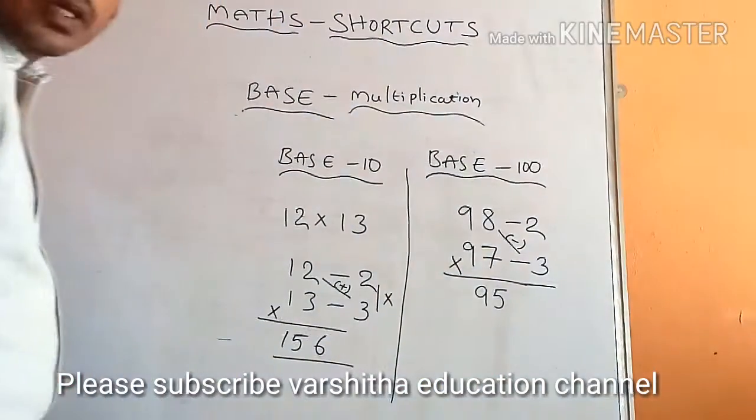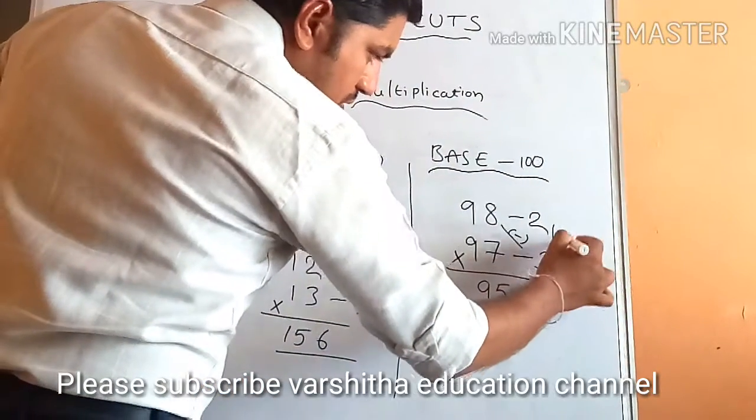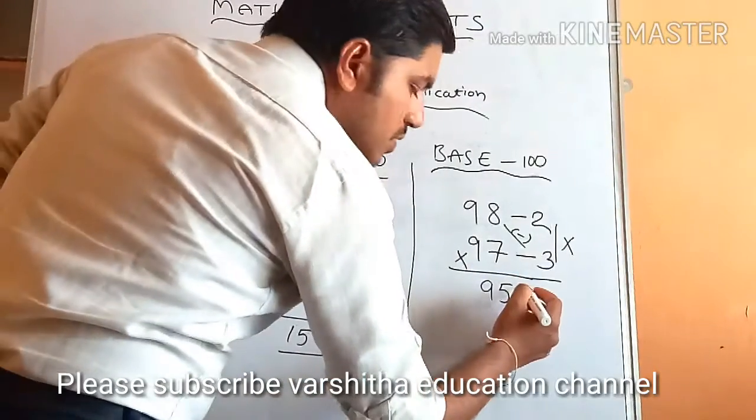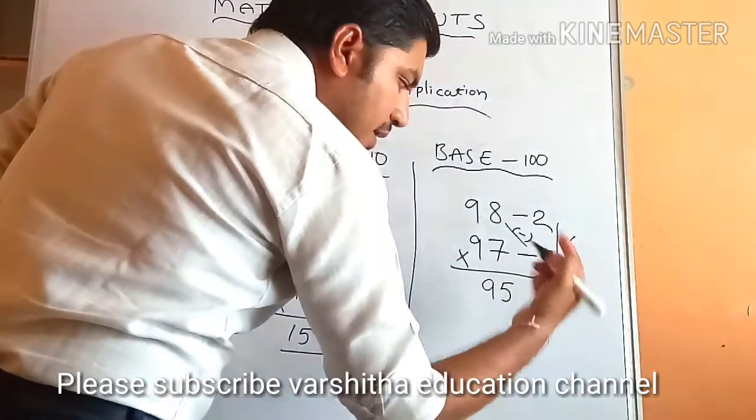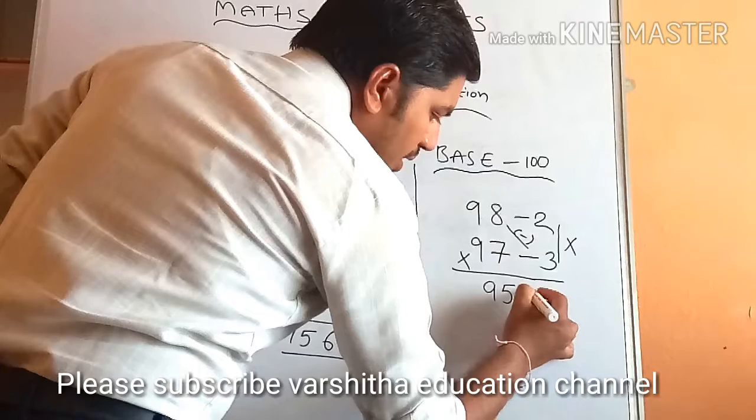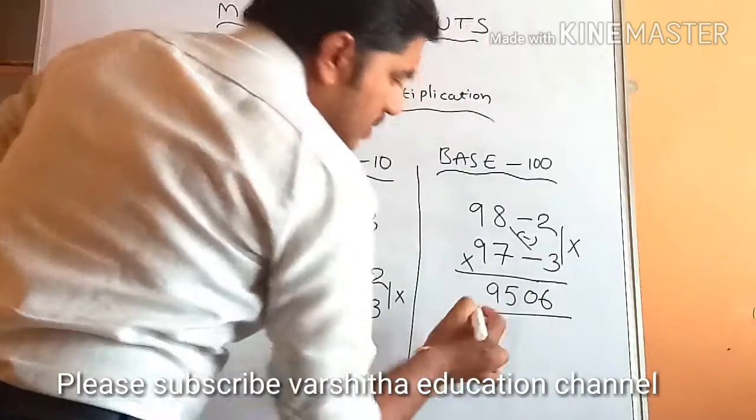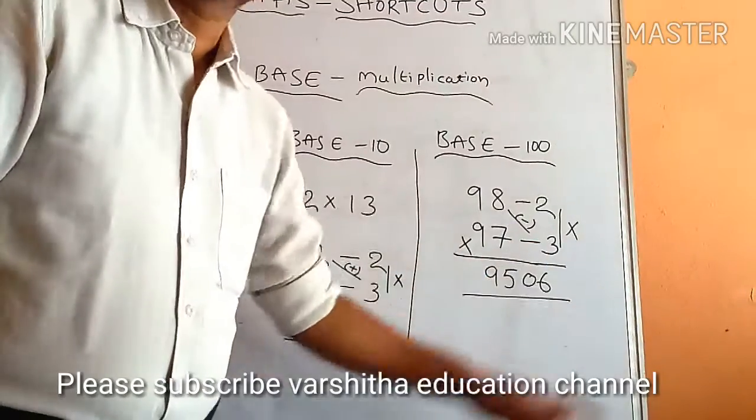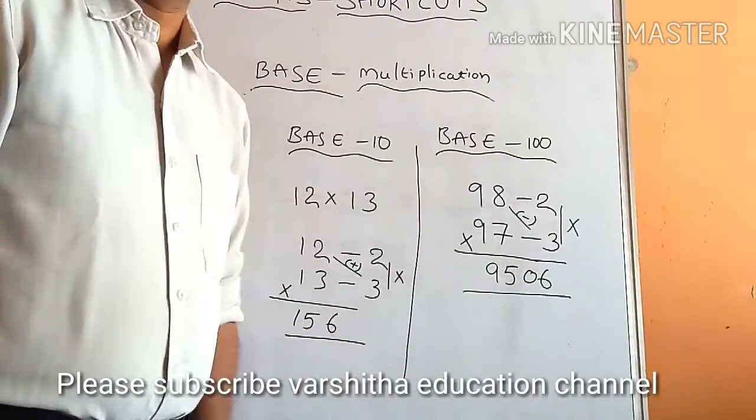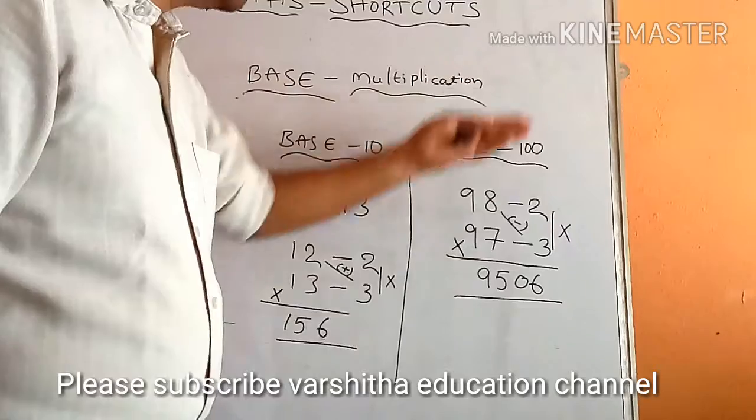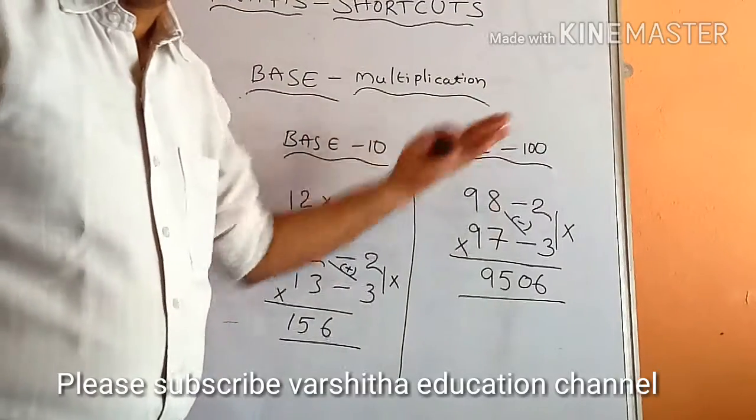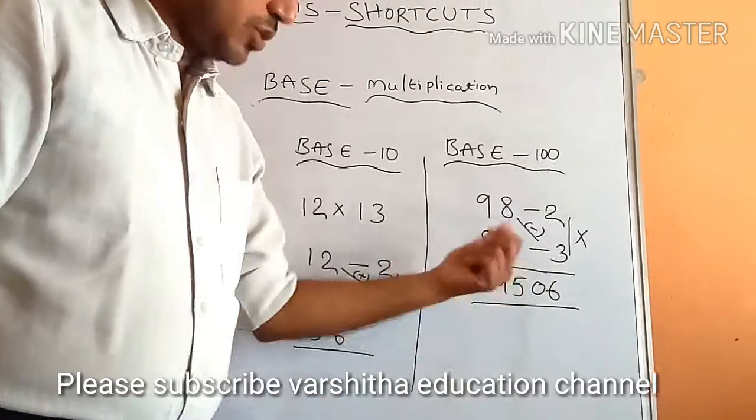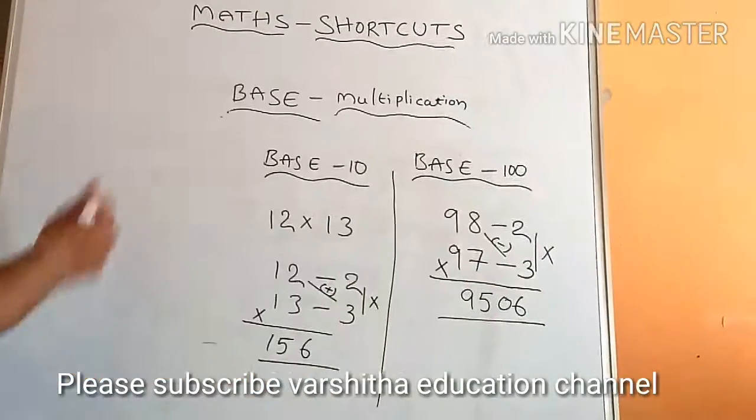Then next one, as usual, just 2 times 3 is 6. You already know that. So then 06 - I am going to take as 06. So this is the value - 9506 will be present. So for example, below 100 means base below value I took, then I calculated, so 9506 is the answer we got. For example, I